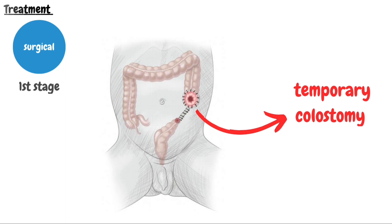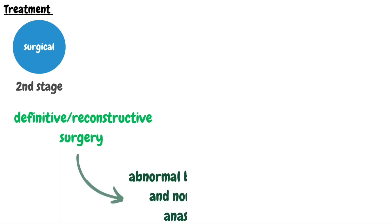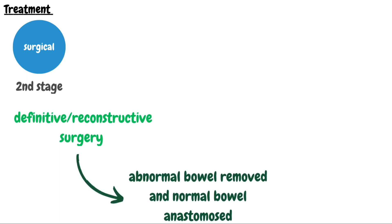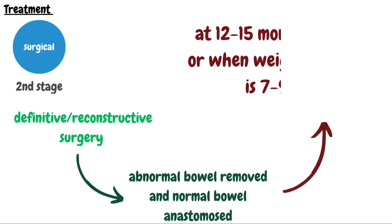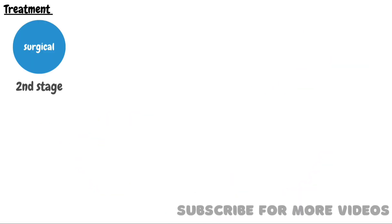The temporary colostomy enables the distended bowel to return to its normal tone and size. The second stage of surgery involves definitive or reconstructive surgery, which involves complete surgical correction in which normal bowel is attached to the anal opening by a pull-through procedure, performed at the age of 12 to 15 months or when the weight of the baby is 7 to 9 kg. There are three types of surgeries used.